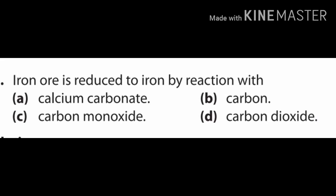Next question: iron ore is reduced to iron by reaction with which chemical? Read the question carefully — it asks which chemical reacts with iron ore, not what substance is added. Options are calcium carbonate, carbon, carbon monoxide, and carbon dioxide. Examine each option carefully; every word is important.